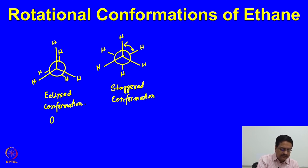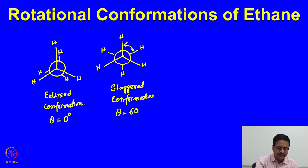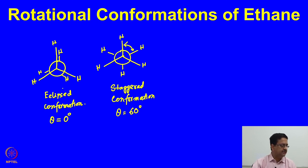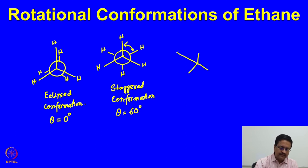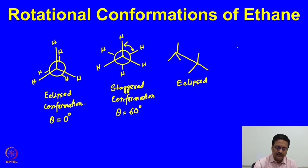In the eclipsed conformation, the dihedral angle theta between the H-C-C-H group is 0 degrees, and in the staggered conformation the dihedral angle is 60 degrees. If we draw these two Newman projections of eclipsed and staggered conformations as Sawhorse projections, the first one drawn is the eclipsed conformation and the second is the staggered conformation.